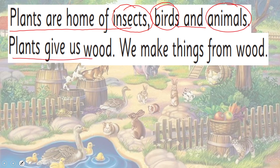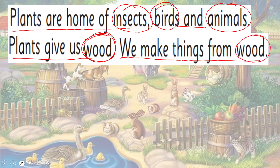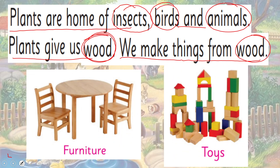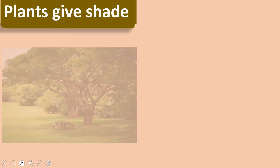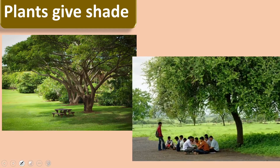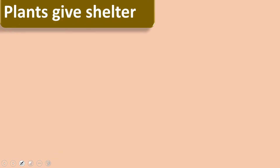Plants give us wood, and we make things from wood. Aap dekh sakte hain ke plants jo hain wo bohut saare keedon, parindon aur jaanwaron ka ghar hain. Iske ilawa yeh hume saaya dete hain aur hum inki lakdi se bohut saari cheezein banaate hain. Here you can see furniture and toys which are made from wood. So plants give us shade — hum iske saaye mein baithte hain aur yeh hume thanda rakhte hain.